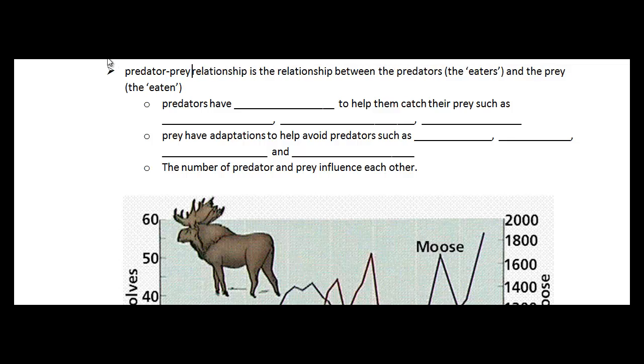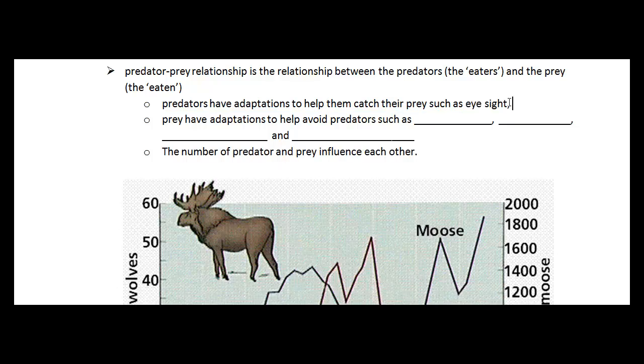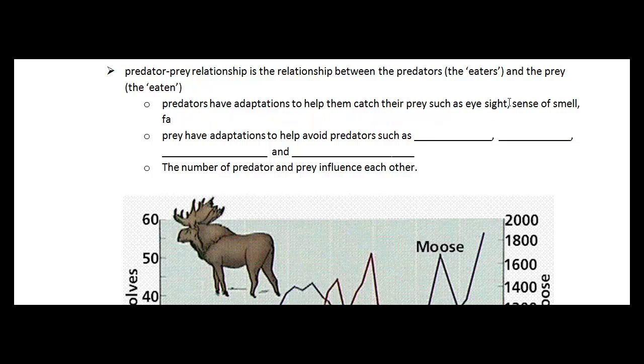The last relationship I want to talk about is predator-prey. And hopefully we'll have time to play a game with that one. So predator-prey relationship is the relationship between the predators, who are the eaters, and the prey who are the eaten. So predators will eat the prey. Predators have many adaptations that make them suitable for their particular environment so that they are able to catch their prey. So some major adaptations are things like really good eyesight or good sense of smell. And then a third would be fangs or those really sharp teeth.